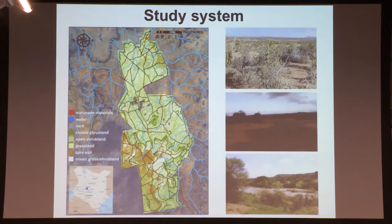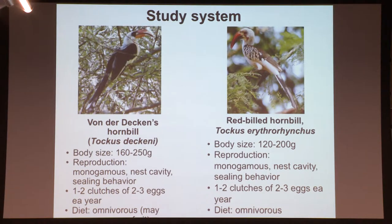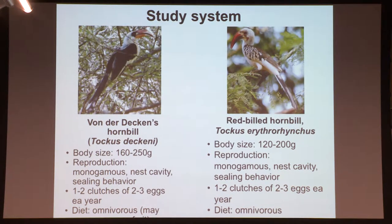The two species I'll be talking about are congeneric: von der Decken's hornbill and red-billed hornbill. They have very similar diets and reproductive strategy — both species seal the female completely inside nest cavities during the breeding season. They have similar diets, although the von der Decken's hornbill may be slightly more frugivorous, and is also slightly larger. Both species have residential home ranges of approximately the same size.